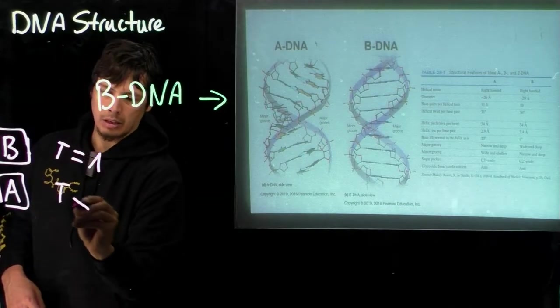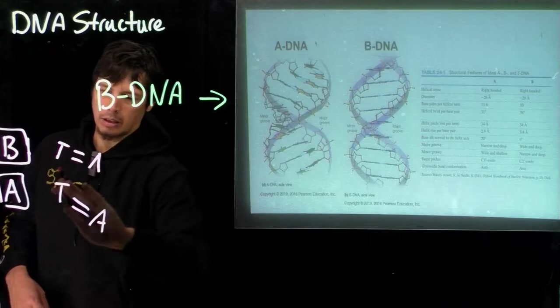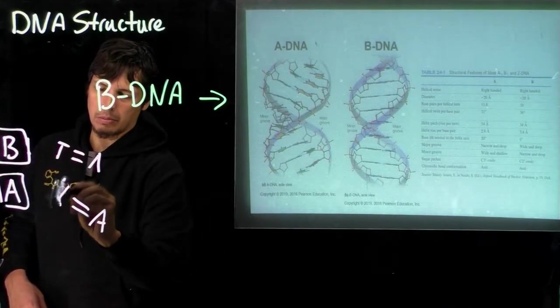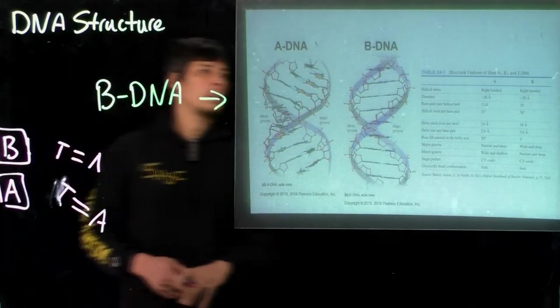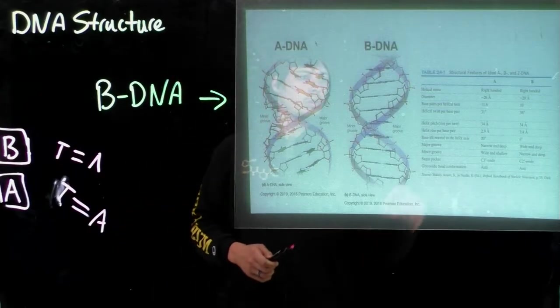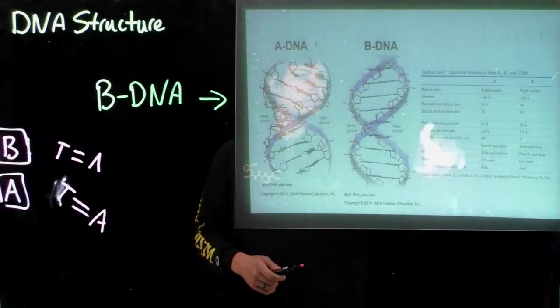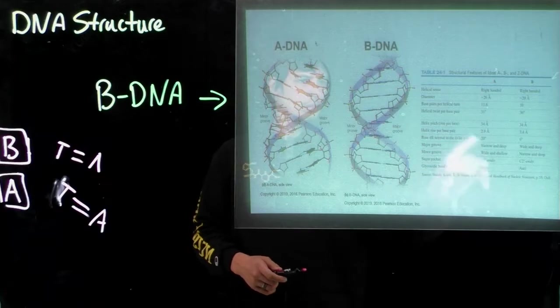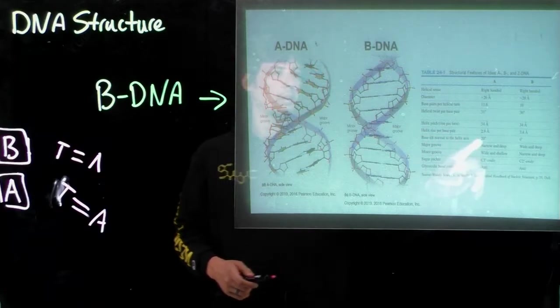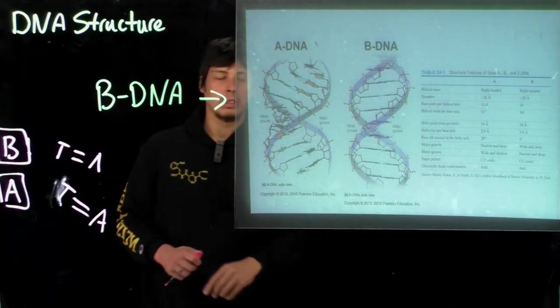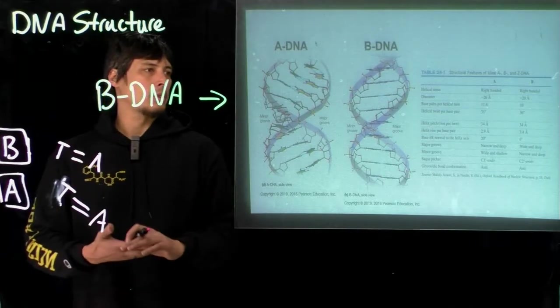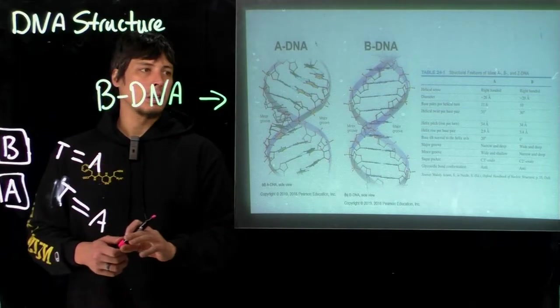And then in the A-DNA, it's going to be much more pronounced. So this is shown in the row, base tilt normal to the helix axis. So for A-DNA, this is 20 degrees versus only six degrees for B-DNA.